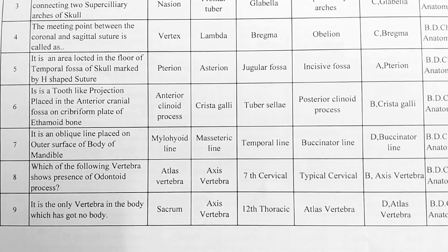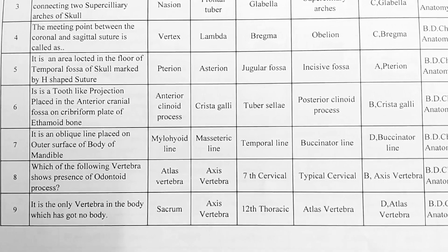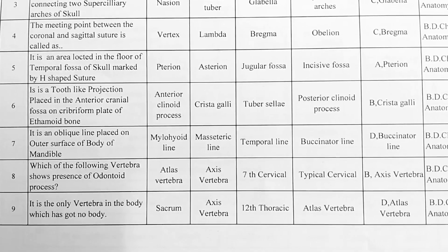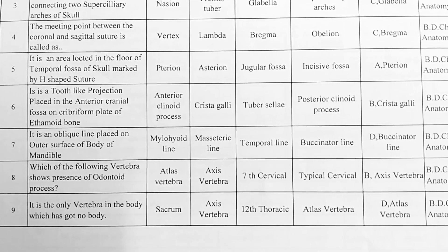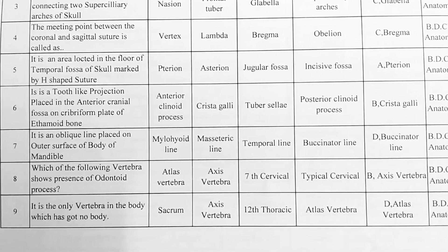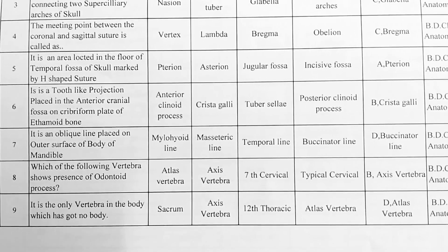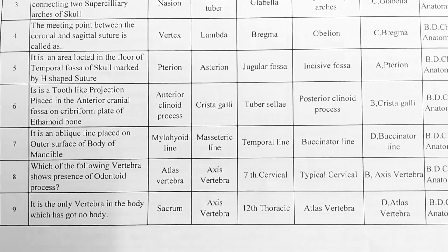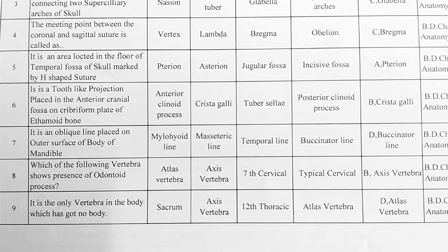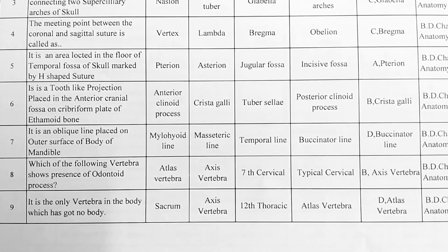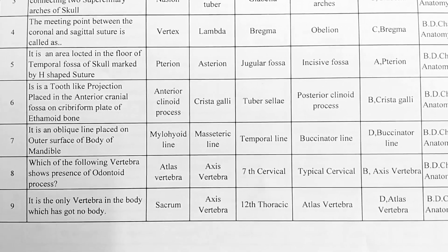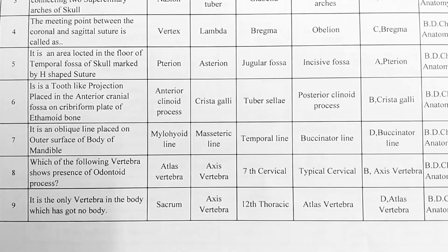Next question. It is a tooth-like projection placed in the anterior cranial fossa on the cribriform plate of ethmoid bone. Options — A: anterior clinoid process, B: crista galli, C: tuberculum sellae, D: posterior clinoid process. Option B is correct, crista galli.